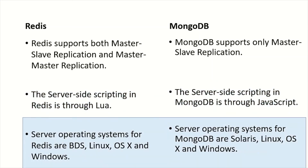Server operating systems for Redis are BSD, Linux, OSX, and Windows. Server operating systems for MongoDB are Solaris, Linux, OSX, and Windows. The operating systems are almost the same except for BSD, which is in Redis, and Solaris, which is in MongoDB.